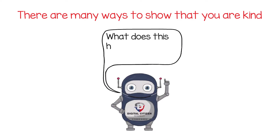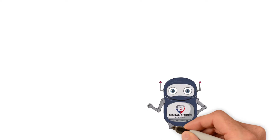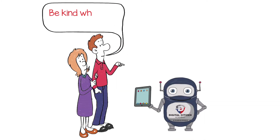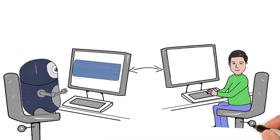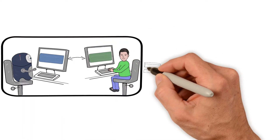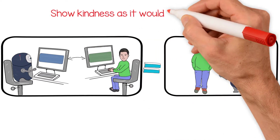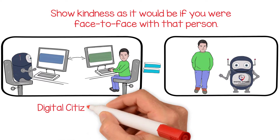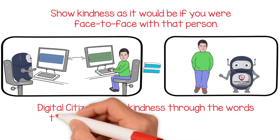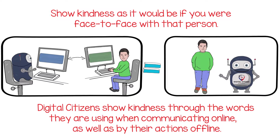But what does this have to do with digital citizenship? Digi's parents told him that he needed to be kind when using technology. There were going to be times in which Digi was interacting with others through a screen. When interacting with someone through a device, it is just as important to show kindness as it would be if you were face-to-face with that person. Digital citizens show kindness through the words they use when communicating online, as well as by their actions offline.